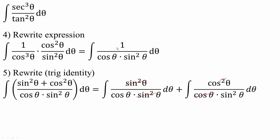Next I use the identity that 1 equals sine squared theta plus cosine squared theta, so I replace the 1 in the numerator with sine squared theta plus cosine squared theta. I then split this into two integrals: sine squared theta over this, plus cosine squared theta over this. Sine squared theta over sine squared theta cancels to give 1 over cosine theta, and the cosine theta in the other term cancels to give cosine theta over sine squared theta.